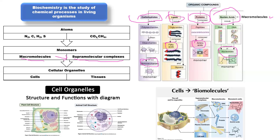Anything that is below the cell cannot sustain life. That is why viruses and prions are not complete living organisms. They are just a combination of macromolecules held together by non-covalent interactions like hydrogen bonding and van der Waals forces. So carbohydrates, lipids, proteins, and nucleic acids rearrange themselves to produce supramolecular complexes.